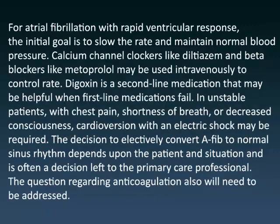For atrial fibrillation with rapid ventricular response, the initial goal is to slow the rate and maintain normal blood pressure. Calcium channel blockers like diltiazem and beta blockers like metoprolol may be used intravenously to control rate. Digoxin is a second-line medication that may be helpful when first-line medications fail.